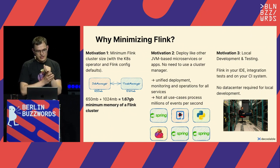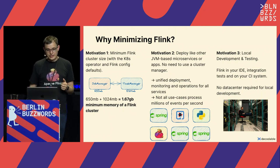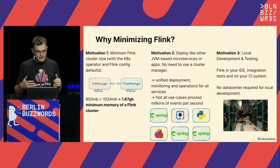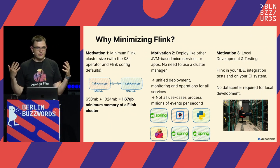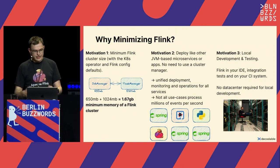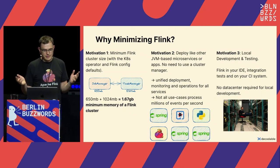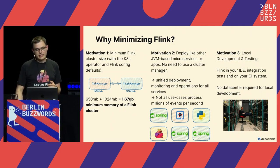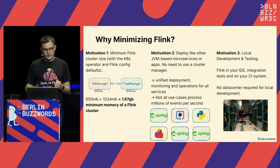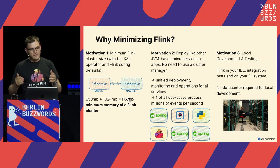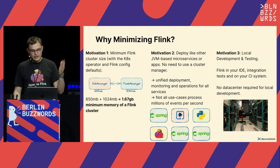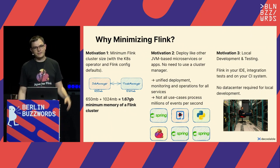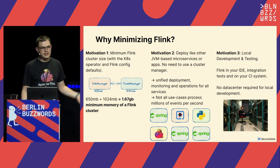The second motivation is when you're deploying Flink internally with low-throughput use cases and want a unified deployment alongside other microservices like Spring or Quarkus applications. You want unified deployment, monitoring, and operations — basically treating everything as a JVM, with Flink deployed as a single JVM reading data from Kafka or Pulsar, analyzing it, and writing results somewhere.